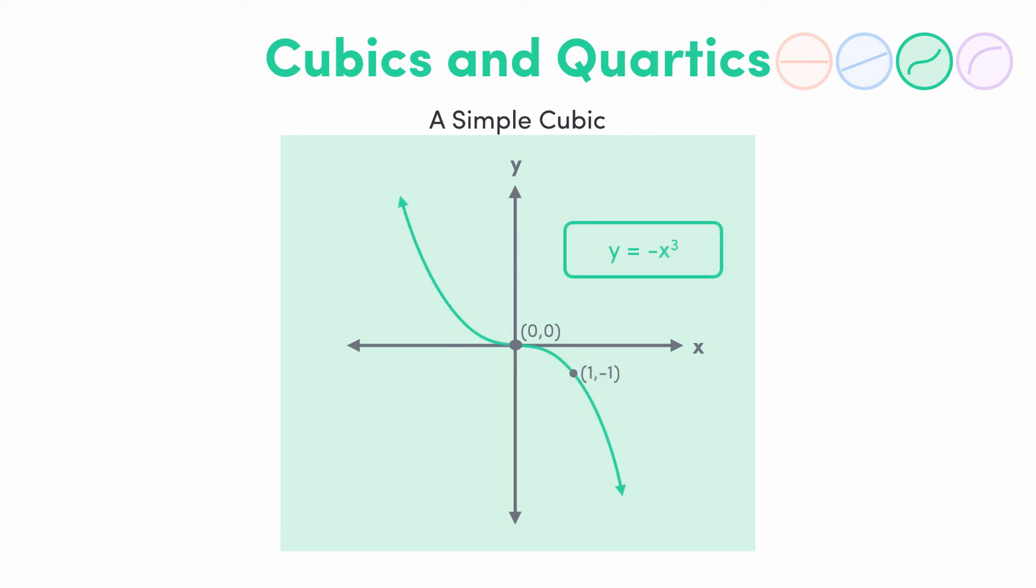What happens if we make the number in front of x cubed negative? Y equals negative x cubed looks like this. It's been flipped around the x axis. The general rule is, if you multiply a function by negative 1, it's going to flip around the x axis, because we've changed all the positive function values to negative function values, and all the negative values to positive, but we'll look at that more in our video later on transformations.